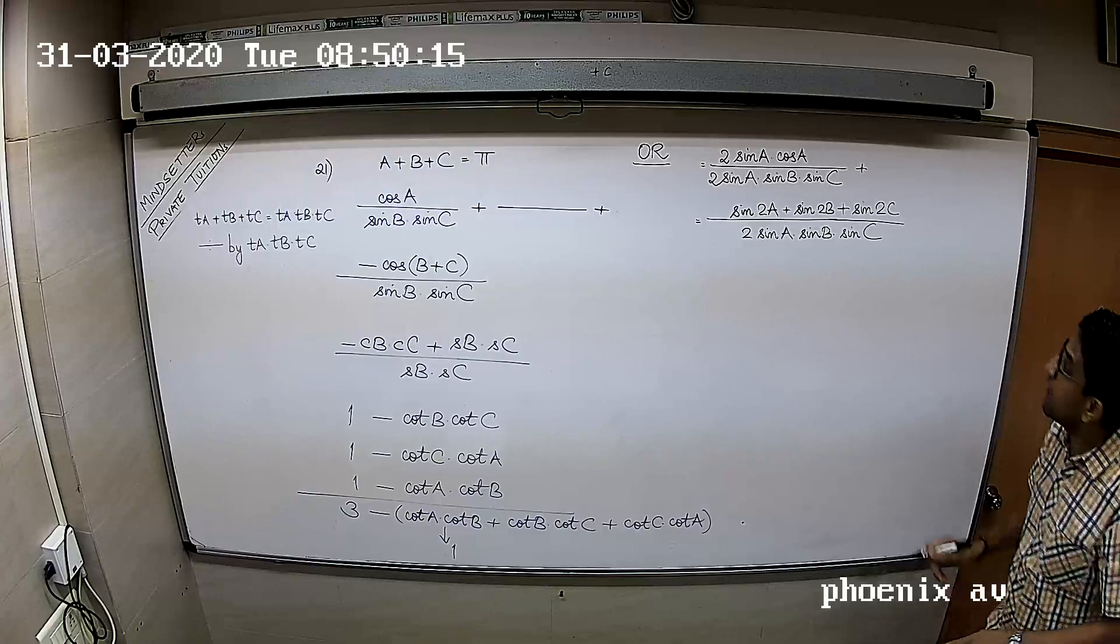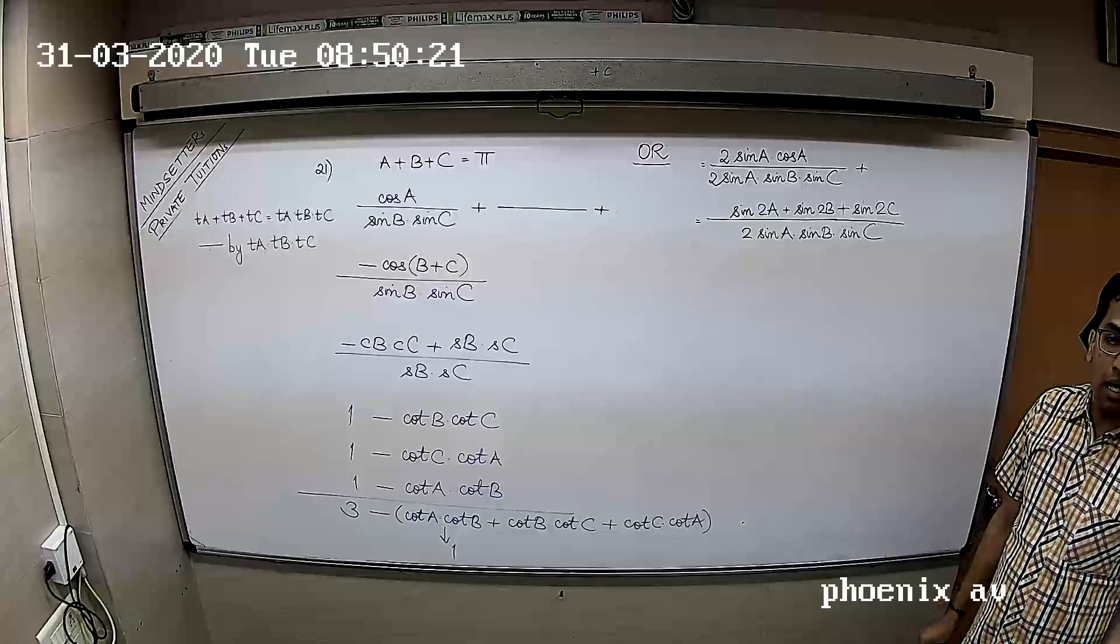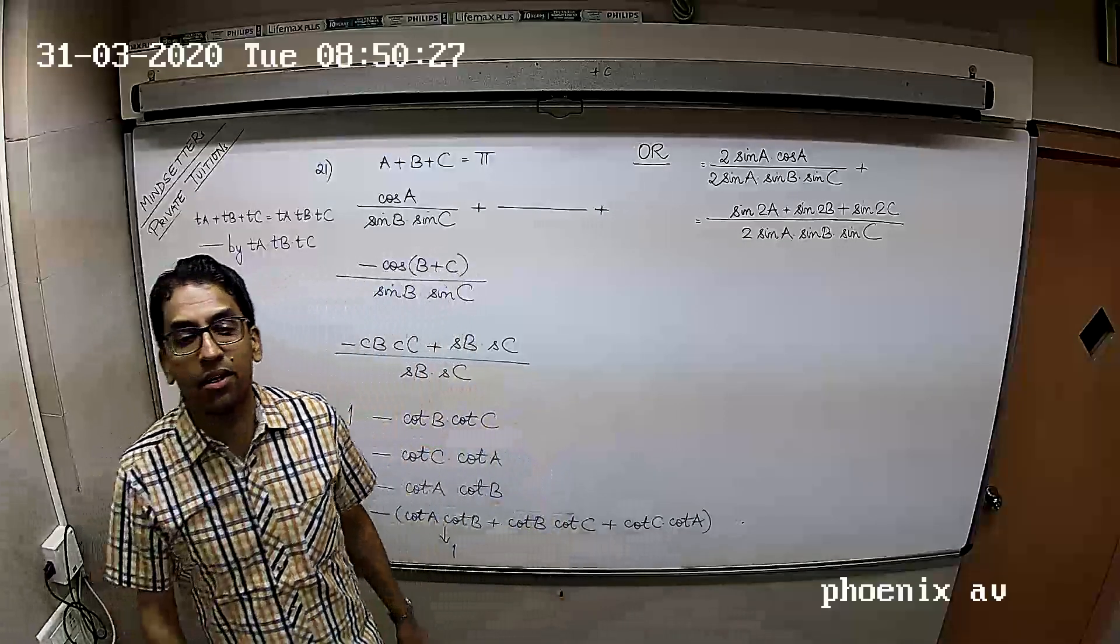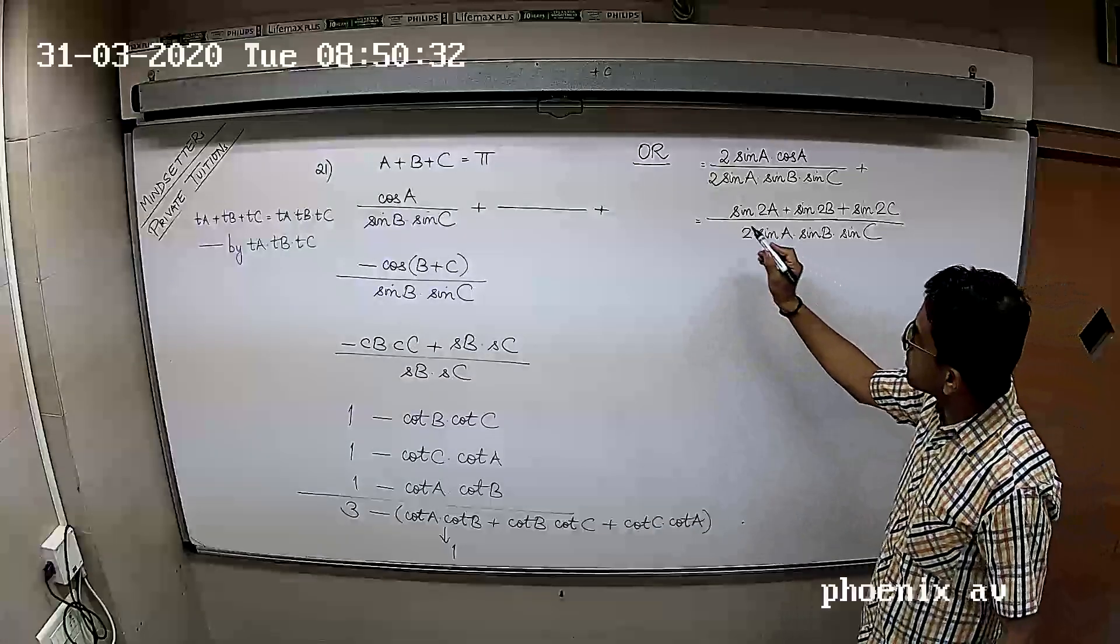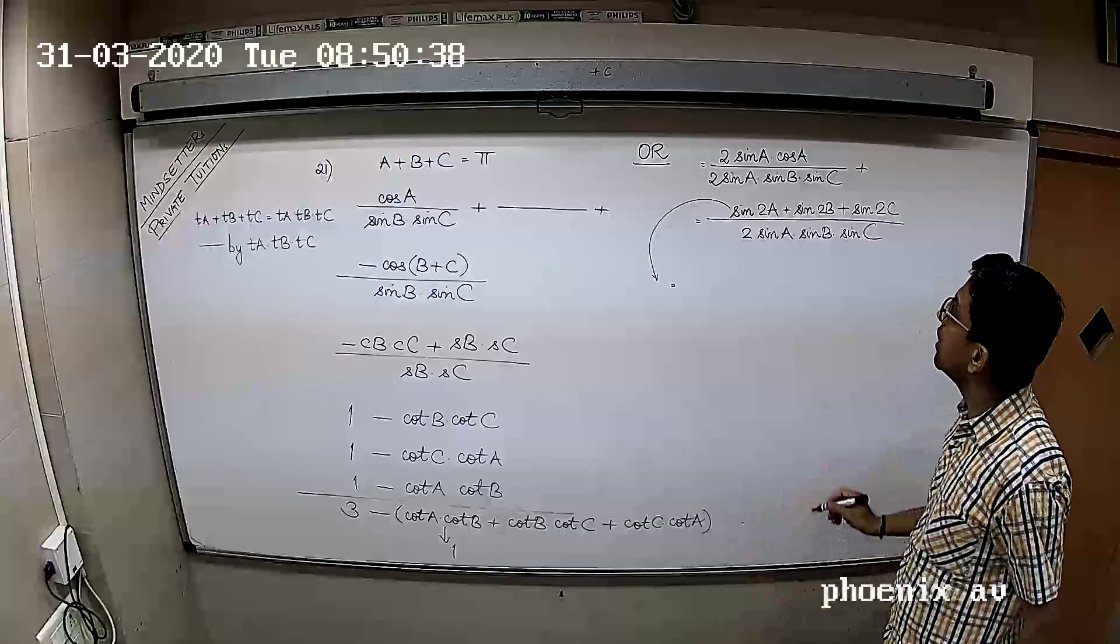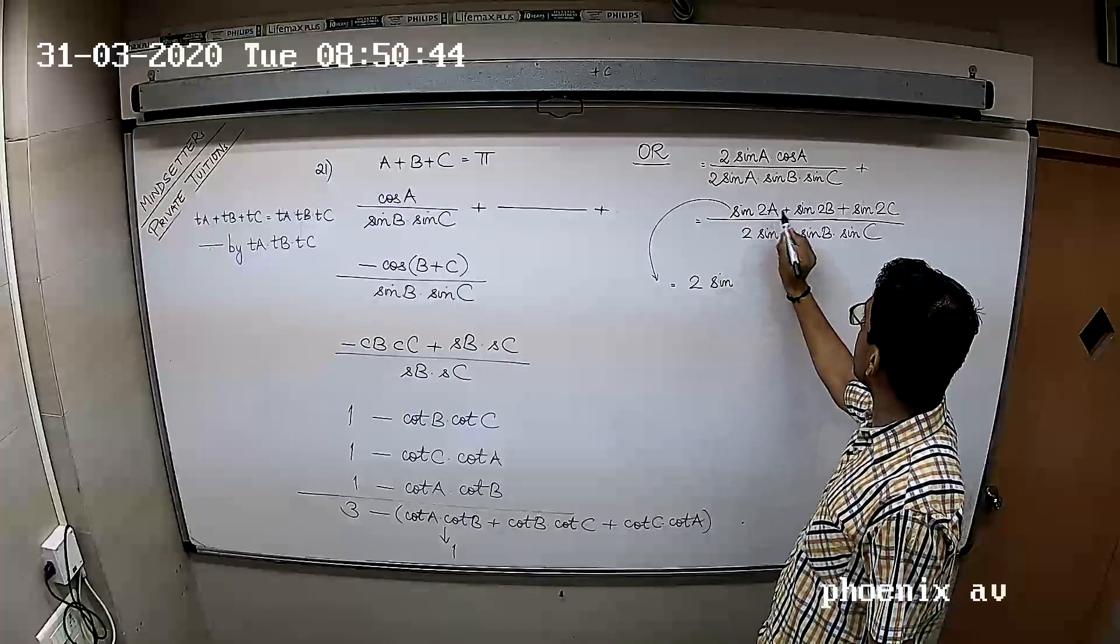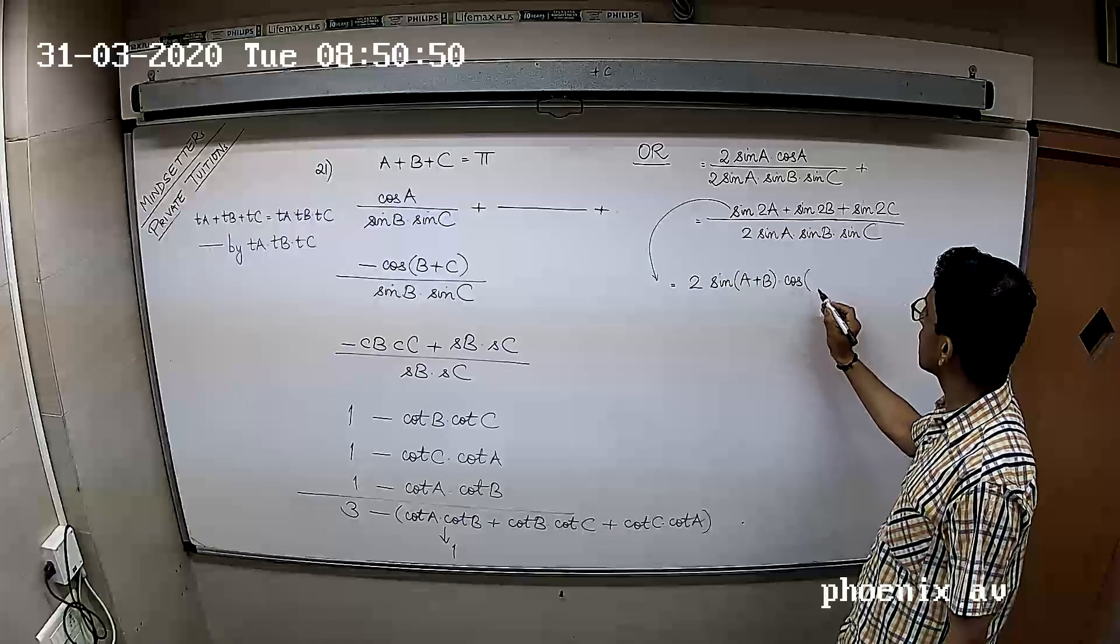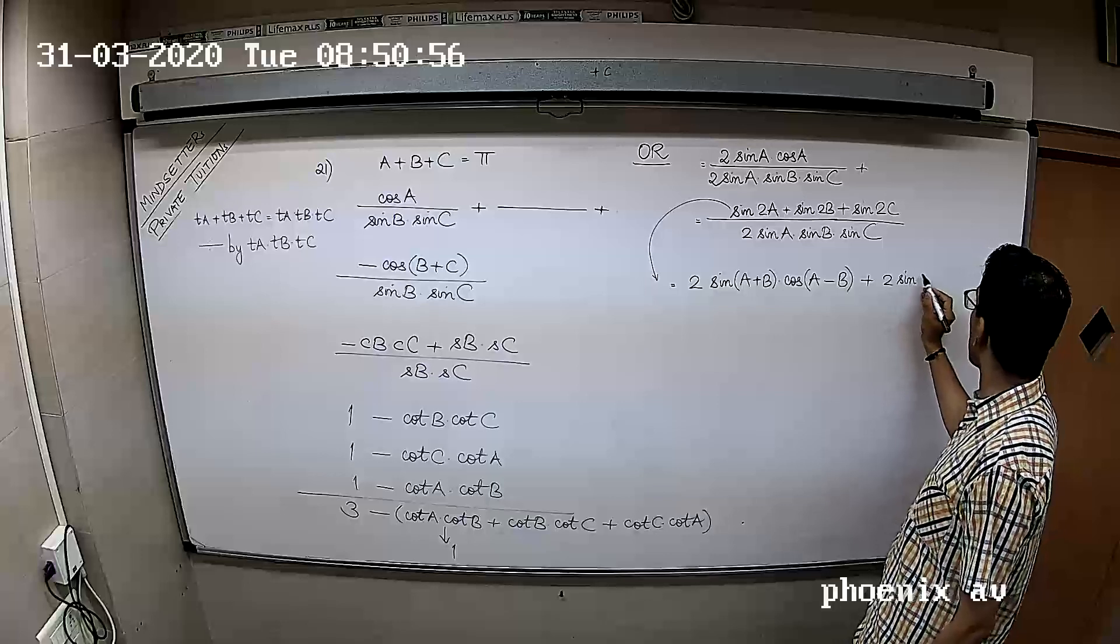Now everyone, this numerator expression is from triangle-related results. This is equal to 2 sin of C plus D by 2 into cos C minus D by 2 plus 2 sin C cos C.